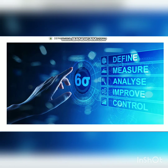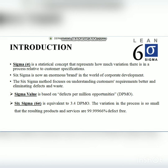Six Sigma is a statistical concept that focuses on understanding customer requirements in a better way to eliminate defects and waste. Six Sigma is like a safety factor — it focuses on achieving 3.4 DPMO, which stands for Defects Per Million Opportunities. Once we achieve that value, the resulting product or service is 99.99% defect-free. That is the achievement of the Six Sigma level.